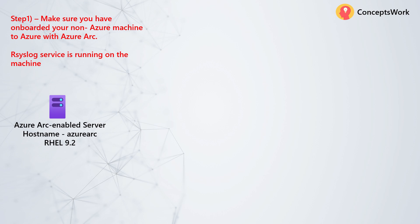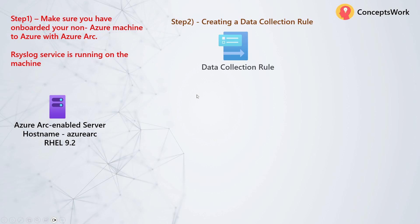Let's talk about the step-by-step process. Step one is to make sure that you have onboarded your non-Azure machine to Azure with the help of Azure Arc. In this video, I'm going to show you how to deploy AMA on an Azure Arc enabled server. I'm using a machine which is RHEL 9.2, the hostname is Azure Arc, and on this machine our syslog service is running.